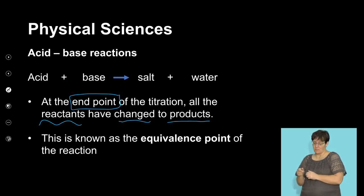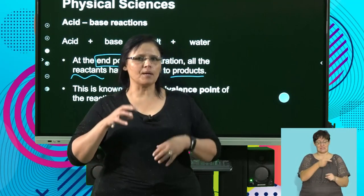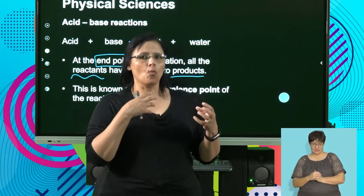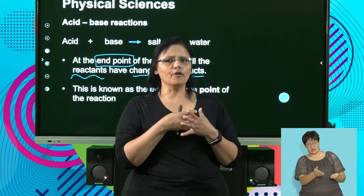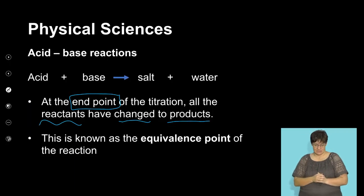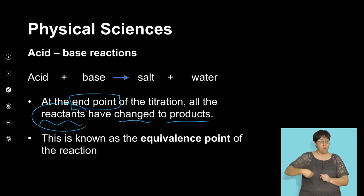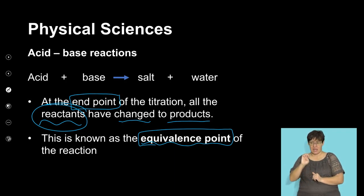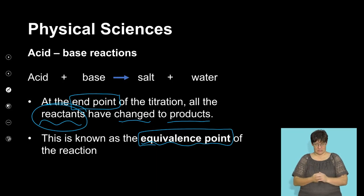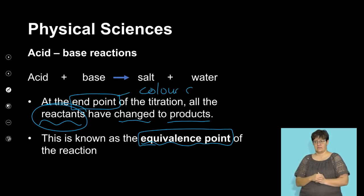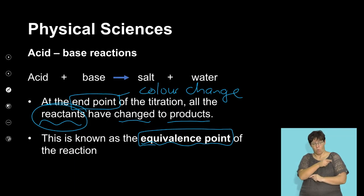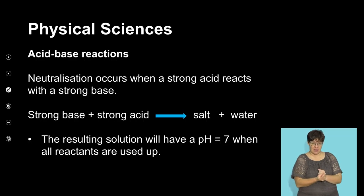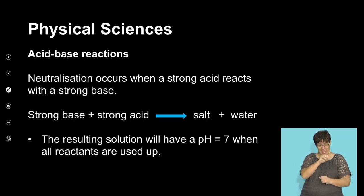When we have the endpoint of a titration, that endpoint means that all the reactants have changed to products. At that endpoint there's no reversible reaction — it basically means that A plus B has now formed C plus D, and that one of your A or B is used up. This is also known as the equivalence point — when all the reactants are used up and changed into products. The endpoint is shown to us by means of a color change.